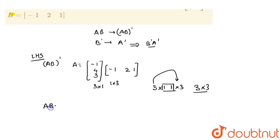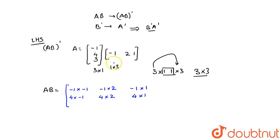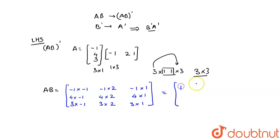So let's make AB first. AB would be: (-1)×(-1), (-1)×2, (-1)×1 in the first row; 4×(-1), 4×2, 4×1 in the second row; 3×(-1), 3×2, 3×1 in the third row. This gives us: 1, -2, -1 in the first row; -4, 8, 4 in the second row; -3, 6, 3 in the third row.